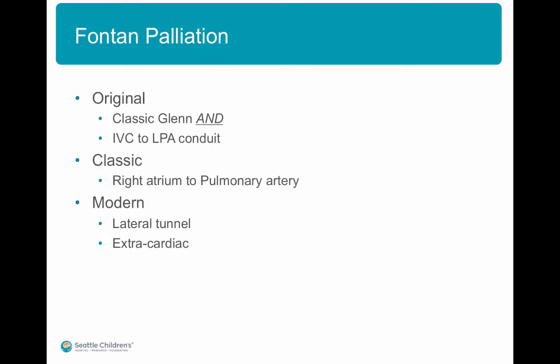Fontan originally described this procedure as a combination of a classic Glenn and a conduit placement from the inferior vena cava to the left branch pulmonary artery. This was abandoned for a procedure where the right atrium was connected to the branch pulmonary artery directly, with the expectation that the right atrium would act as a pump. However, the right atrium over time does not act as a good pump and gets dilated. Modern Fontan palliation includes a lateral tunnel through the right atrium and an extracardiac conduit.